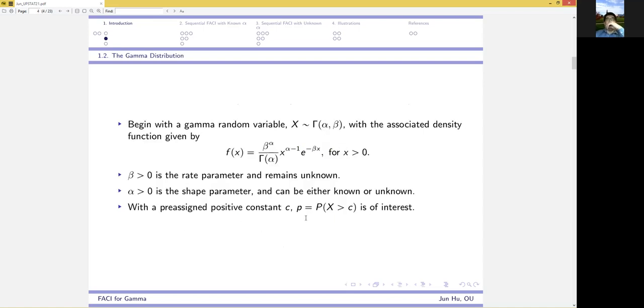The problem of interest here is to estimate the probability that a gamma random variable exceeds a pre-assigned constant C. This quantity is useful especially in the areas of lifetime data analysis and reliability analysis.